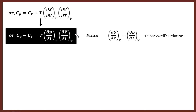So Cp minus Cv is given by: Cp minus Cv equals T times (∂P/∂T) at constant v, times (∂V/∂T) at constant p. Note down this expression — this is a very important expression and the relation we want.